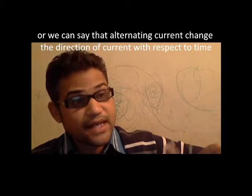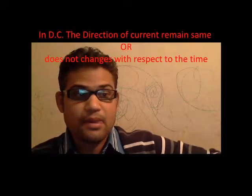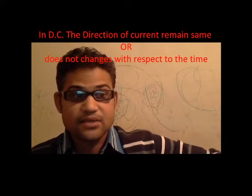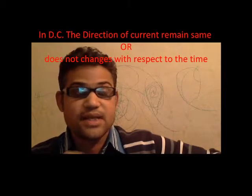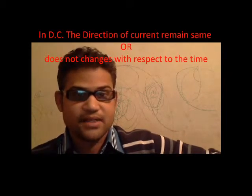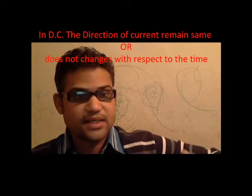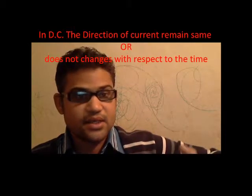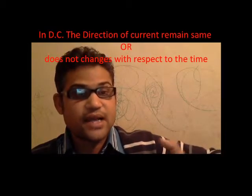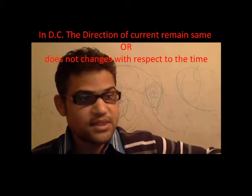Whereas direct current is just like a straight line. Direct current is that current in which the direction of current remains the same.